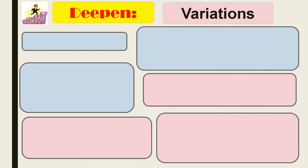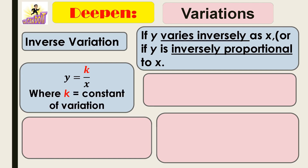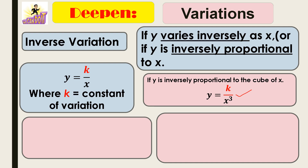Next, inverse variation. If y varies inversely as x, or if y is inversely proportional to x, then y equals k over x. This time the constant is in the numerator and x is in the denominator, where k is the constant of variation. If y is inversely proportional to the cube of x, this is its expression and equation.